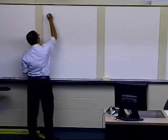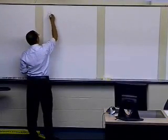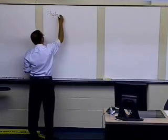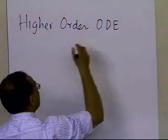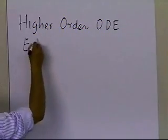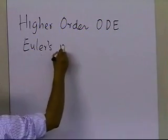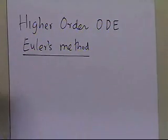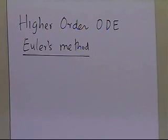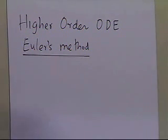In this segment, we're going to talk about higher-order ordinary differential equations, and we're going to take an example and see how we can use Euler's method to solve a higher-order ordinary differential equation. Euler's method is used only for solving first-order ordinary differential equations, so if somebody gives you a higher-order ODE or coupled ordinary differential equations, you have to reduce them to simultaneous first-order ordinary differential equations to be able to solve them.